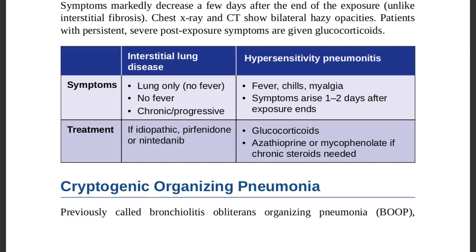Treatment: if etiology is idiopathic interstitial lung disease, use pirfenidone and nintedanib. Hypersensitivity pneumonitis is best treated with glucocorticoids. If chronic steroids are needed long-term, switch to azathioprine or mycophenolate to wean the patient off steroids.